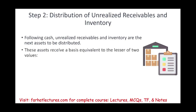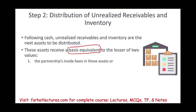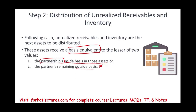These assets receive a basis equivalent to the lesser of two values: the partnership's inside basis in those assets, or the remaining outside basis of the partner. Because once you eliminate the outside basis of the partner, you can't go below zero — so the lower of these two will be used. The partner's outside basis is reduced by the amount of basis allocated to this ordinary income-producing asset.